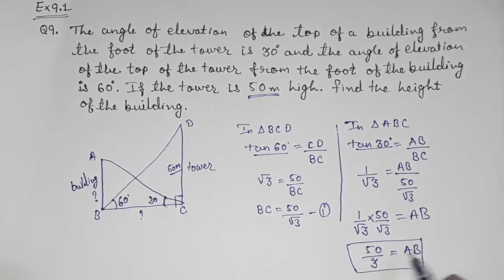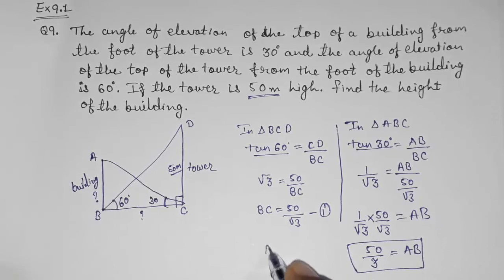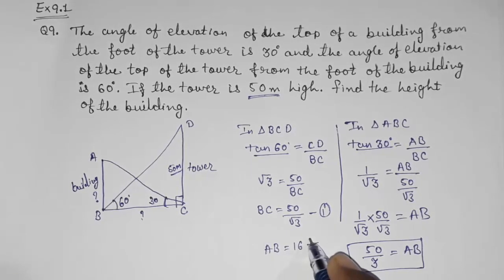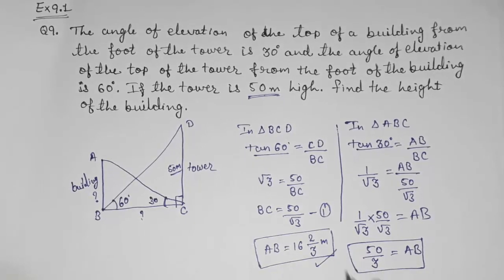If you want to convert it into a mixed fraction, that will become 16 and 2/3. So the height of the building is 16⅔ meters. Thank you so much for watching my video — if you like it, please subscribe to my channel.